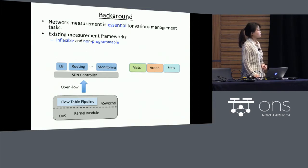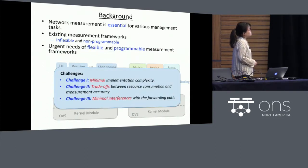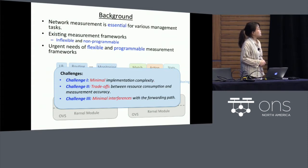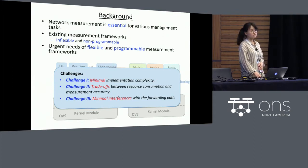This is how UMON, one of our earlier works, is proposed. UMON decouples monitoring from forwarding by introducing an independent monitoring module in the user space. So to build monitoring capabilities into the OpenVSwitch, there are several challenges we need to address. First, we need to ensure minimal implementation complexities as well as minimal interferences with the forwarding path in order to guarantee the forwarding and monitoring efficiency. And besides, we also want to strike a balance among various factors, including the resource consumption and measurement accuracy.